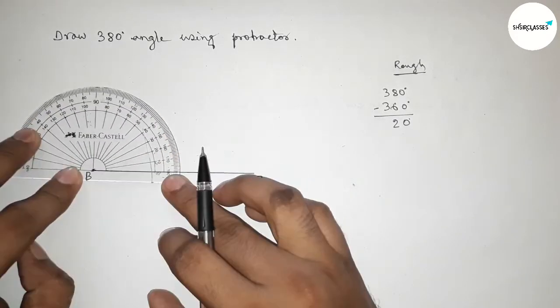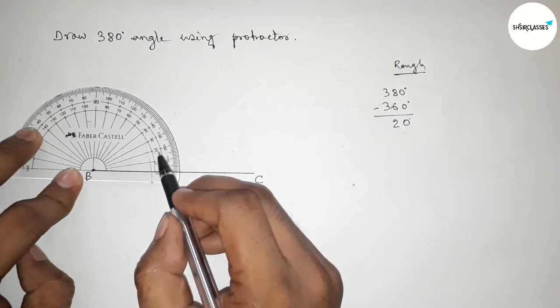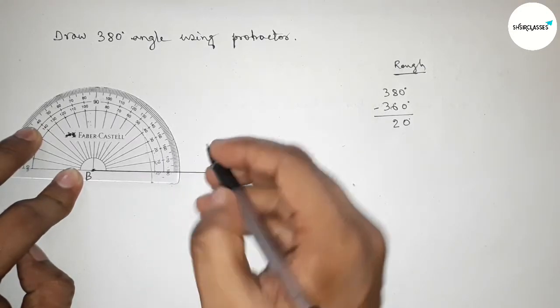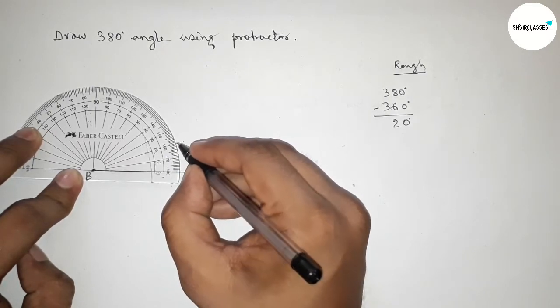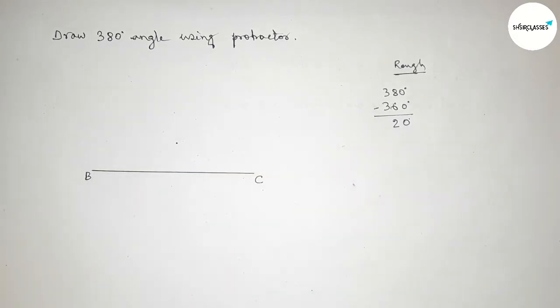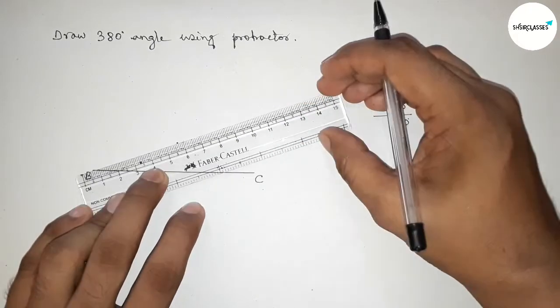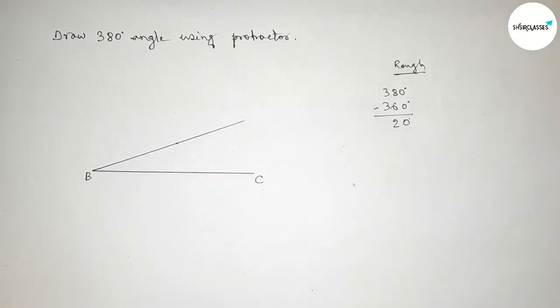This is starting 0, this is 10, and this is 20 degrees. So this line marking, here marking 20 degree angle. Now joining this line, so joining this and taking here a point A.